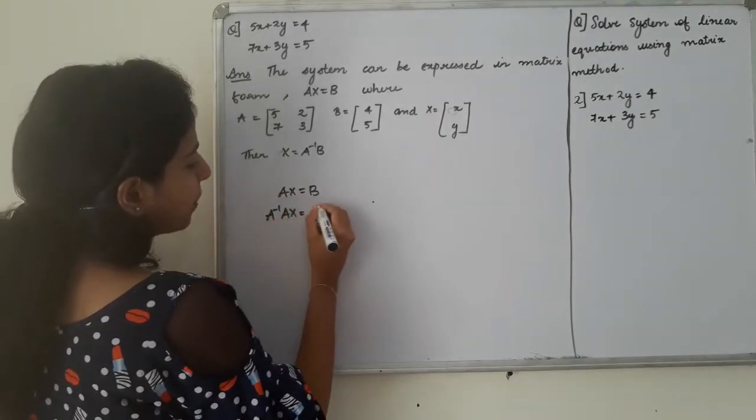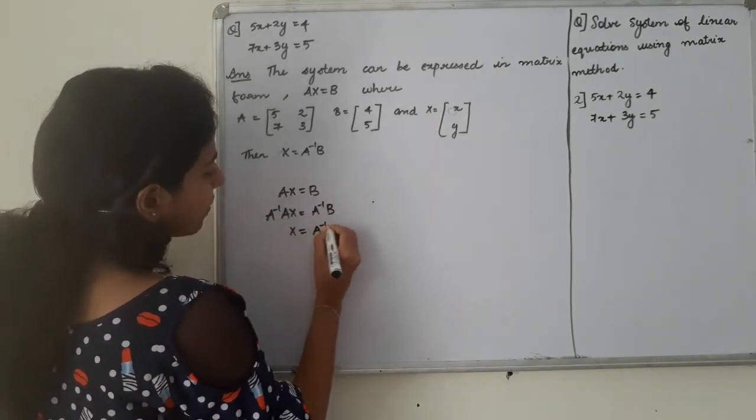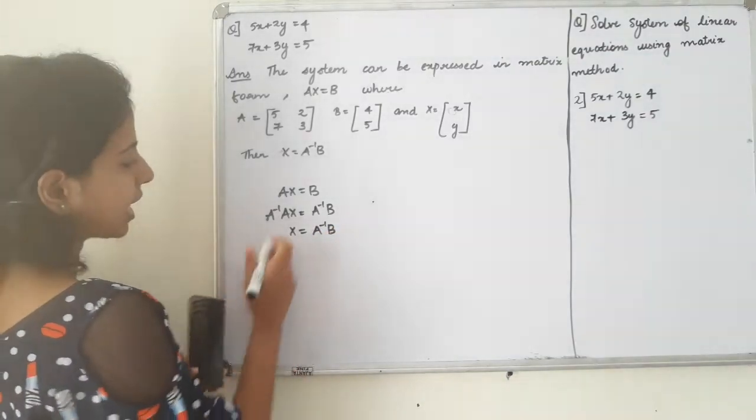We will pre-multiply. It will be so good. X is equal to A inverse of B inverse. Okay. Let's take one mile.